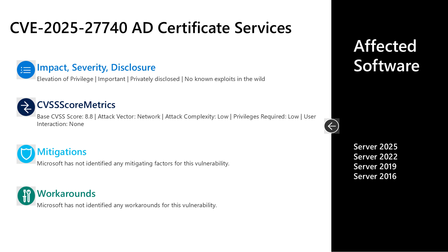Next is CVE-2025-27740, an important elevation of privilege vulnerability, privately disclosed with no known exploits in the wild. This is in the Active Directory Certificate Services, or ADCS. It has a CVSS base score of 8.8. The attack vector is over the network, the attack complexity is low, low privileges are required, but no user interaction is required. There are no documented mitigations or workarounds, and it only affects the server versions of Windows.